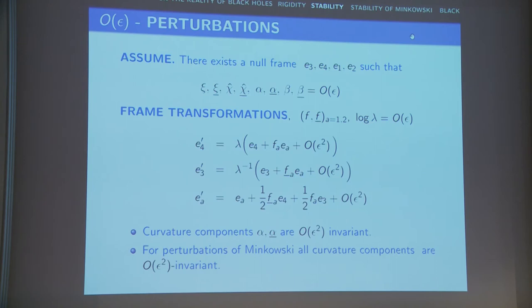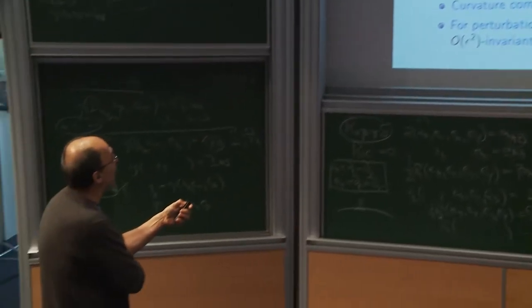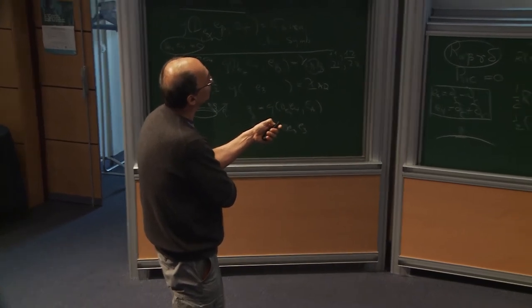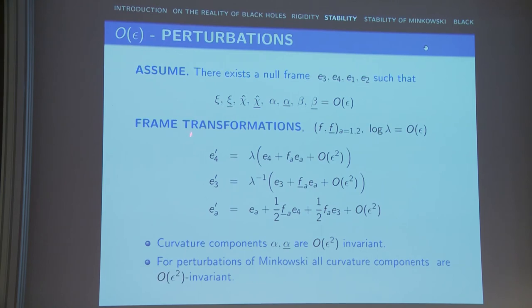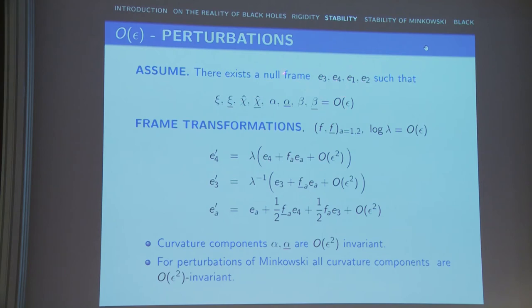For perturbations, I take a Kerr solution and perturb it slightly, expecting the solution stays close to the original Kerr. At the simplest level, I speak of O(epsilon) perturbations: I assume there exists a frame E3, E4, E1, E2 close to the Kerr frame, such that all components that were exactly zero in Kerr are now O(epsilon). The problem is that many frames can achieve this, since any null frame transformation with parameters F, F-bar, log-lambda all O(epsilon) will preserve this condition.